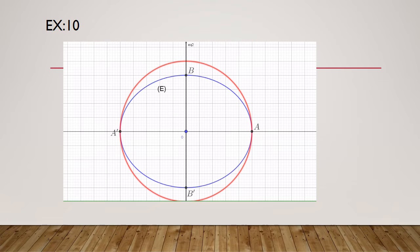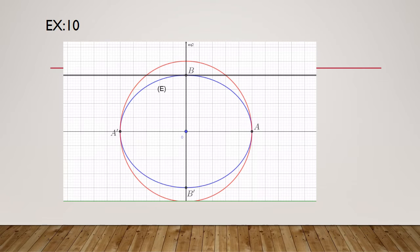We know that OBQF is a rectangle, so BQ is perpendicular to BO. We draw line D passing through B and perpendicular to BO. The point Q is the intersection of this circle with this line. Now F is the orthogonal projection of Q onto line AA', giving us point F. F' is the symmetric of F with respect to the origin, giving us F'.